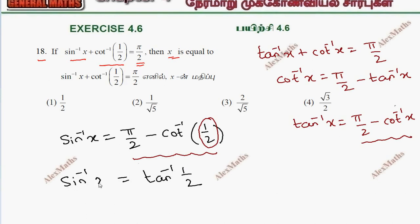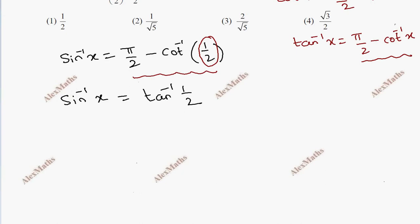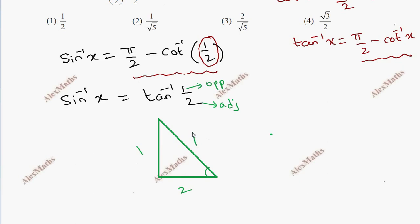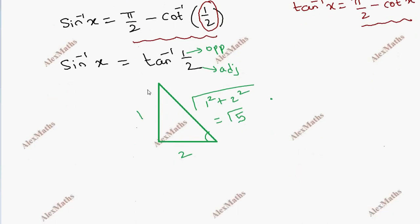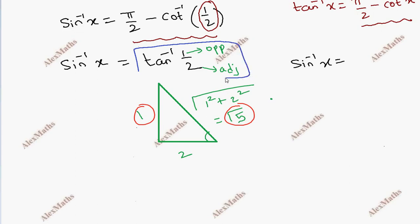Now converting to sin inverse using a right angle triangle. With tan equal to 1/2, the opposite side is 1 and adjacent is 2, so the hypotenuse is square root of 1 squared plus 2 squared, which is root 5. Therefore sin inverse x gives opposite over hypotenuse, so x is equal to 1 by root 5.